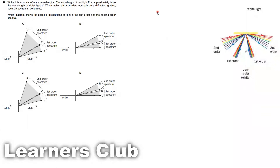When white light strikes the diffraction grating, you'll get spectra in this pattern. The center — the zero order — will be white light because all the colors will have a path difference of zero. As a result, all of them combine and form white light again. This is the first order on either side and the second order.